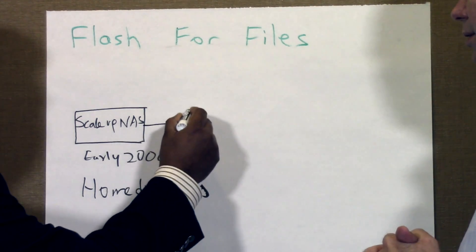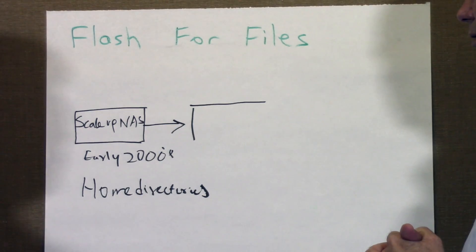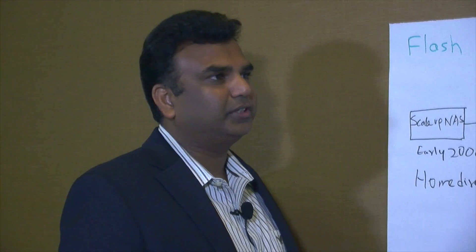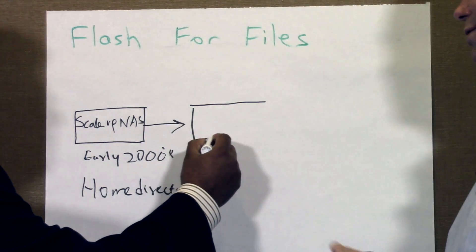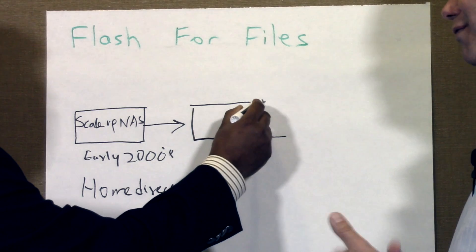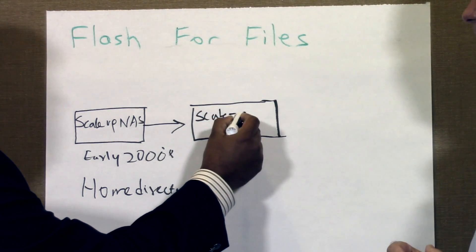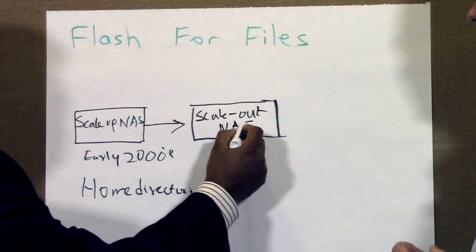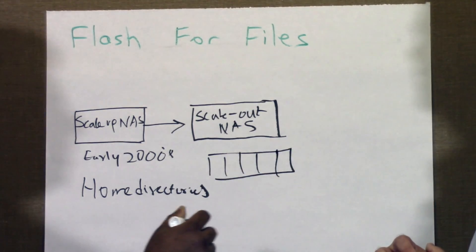From there, there was a need — these scale-up NAS was working well, except you ended up with multiple filers, one for each department, for different applications. You ended up with too many things. The old line was your first filer was great, your 50th filer killed you. Then came scale-out NAS, which solved the problem of having a bunch of boxes by combining them into one single logical box.